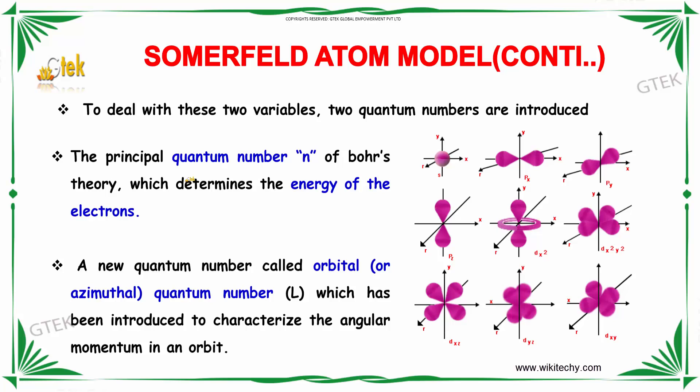A new quantum number called orbital or azimuthal quantum number, L, has been introduced to characterize the angular momentum of an orbit.